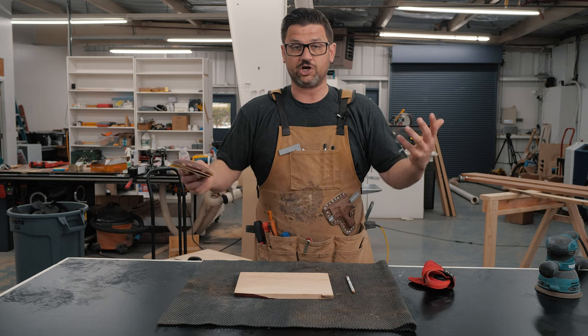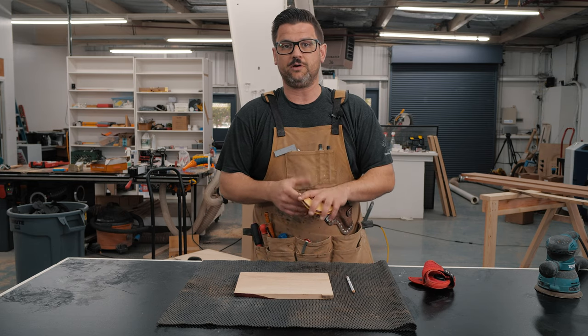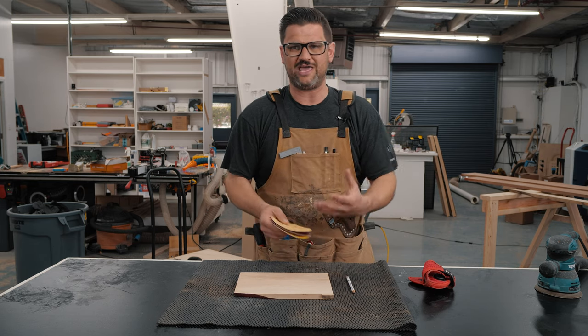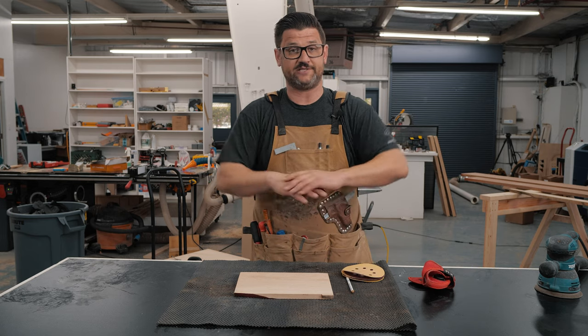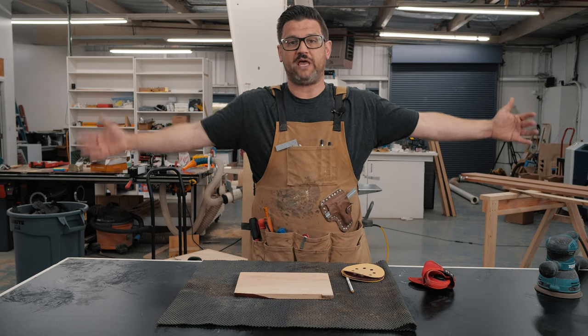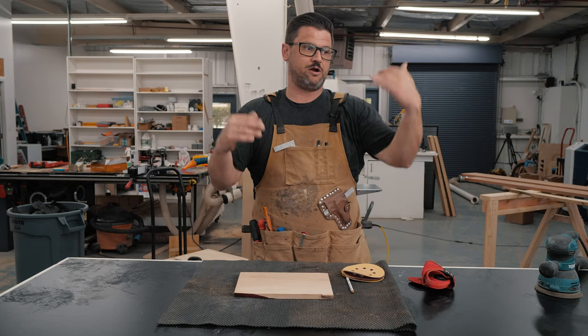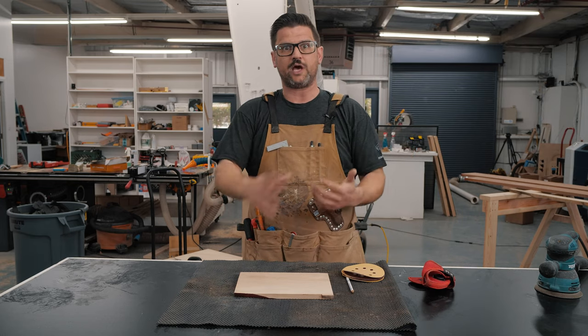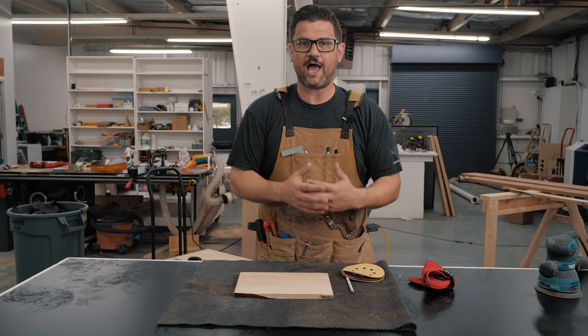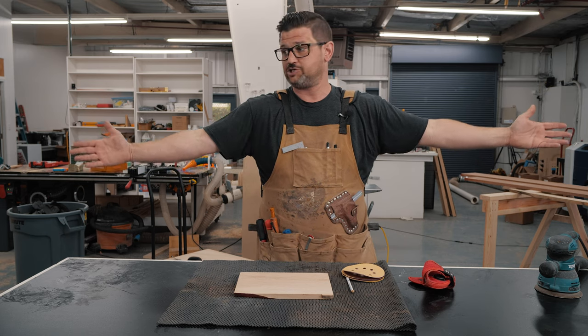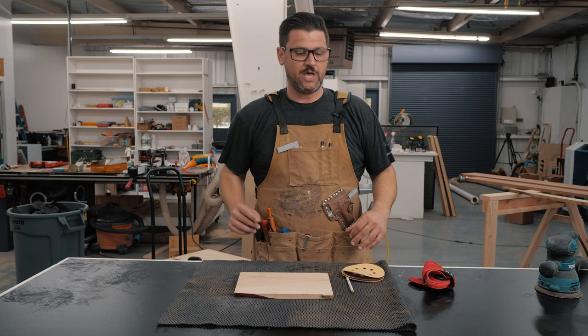As you're sanding up through the grits, you're going to take away quite a bit of material. And the question is, how do you take it away evenly? Especially on these nightstands, I had these 42-inch panels that were grain-wrapped miters. I sanded them all before we cut them, and it's like, how do you stay the same thickness across 42 inches? Well, it's simple. I'm going to show you.